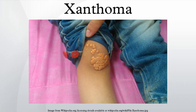They are associated with hyperlipidemias, both primary and secondary types. Tendon xanthomas are associated with type II hyperlipidemia, chronic biliary tract obstruction, and primary biliary cirrhosis. Palmar xanthoma and tubero-eruptive xanthoma occur in type III hyperlipidemia.